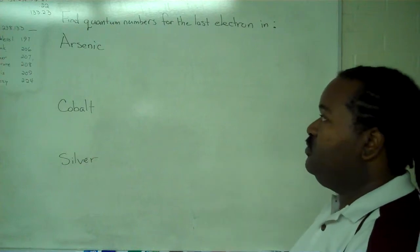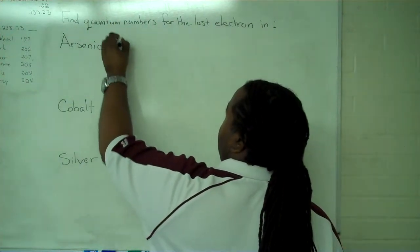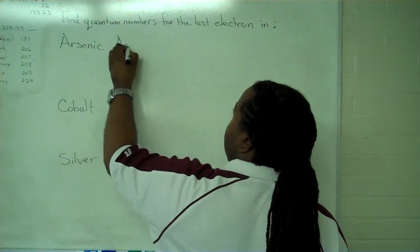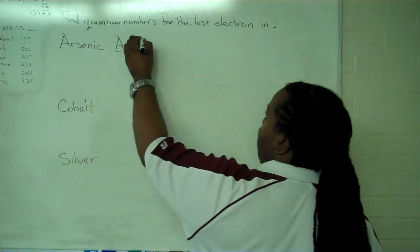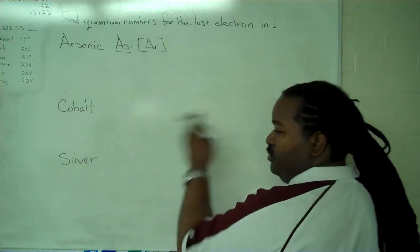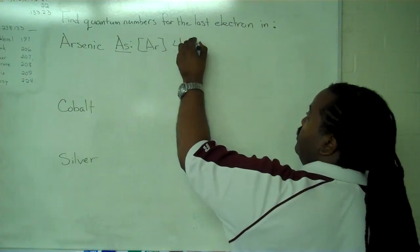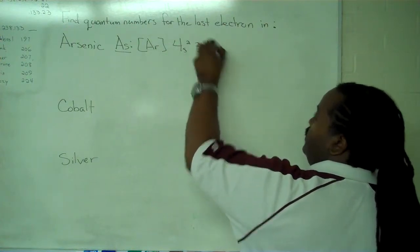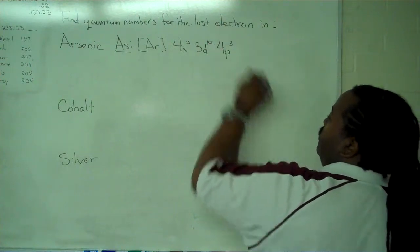So, the first thing we need to do is determine an electron configuration for arsenic. We get our noble gas core as argon, and then we write out everything else. We have 4s2, 3d10, and 4p3.